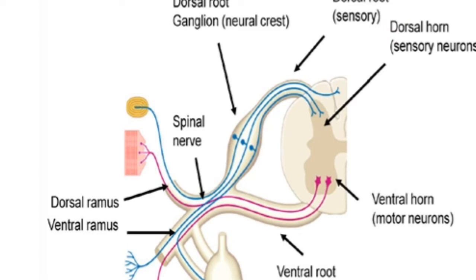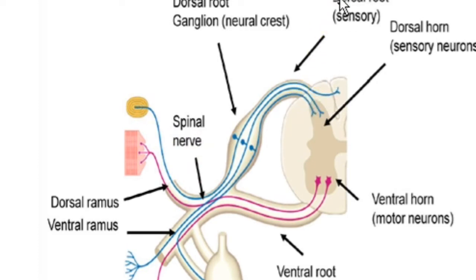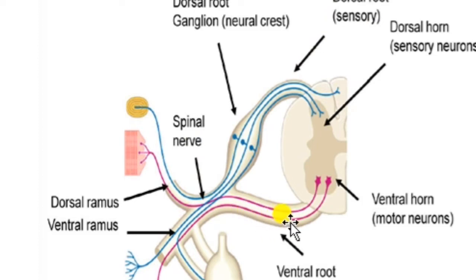Spinal nerves are mixed nerves, meaning they contain both sensory fibers and motor fibers. The sensory or afferent fibers carry information from the sense organs towards the spinal region and then to the brain. The motor fibers come out through the ventral root, while the sensory fibers travel to the brain through the dorsal root.